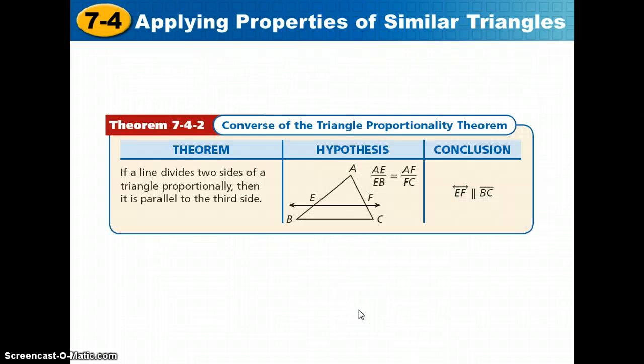Alright, the next theorem in our notes is the converse of the triangle proportionality theorem. It states, if a line divides two sides of a triangle proportionally, then it is a parallel line to the third side. So what we have is that the line EF crosses these two sides of the triangle such that AE over EB equals AF over FC, so we can conclude the lines are parallel.